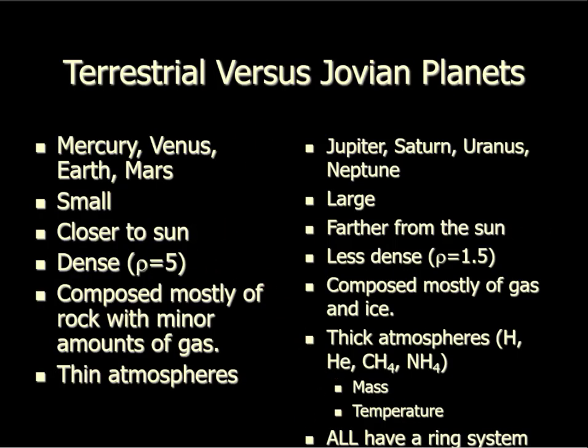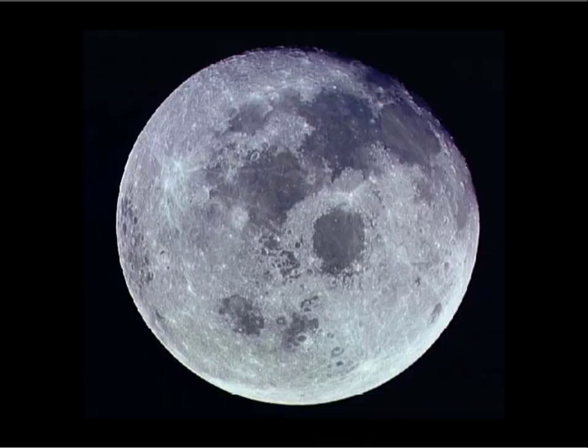Let's think about the Moon — in particular its surface. Last time we talked about how the same side always faces us, phases, eclipses, and the Moon's motions. Today I want to talk about the surface. You can think of the Moon as a terrestrial planet — it's not a planet, it goes around the Earth, not the Sun, but it is a pretty large rocky body.